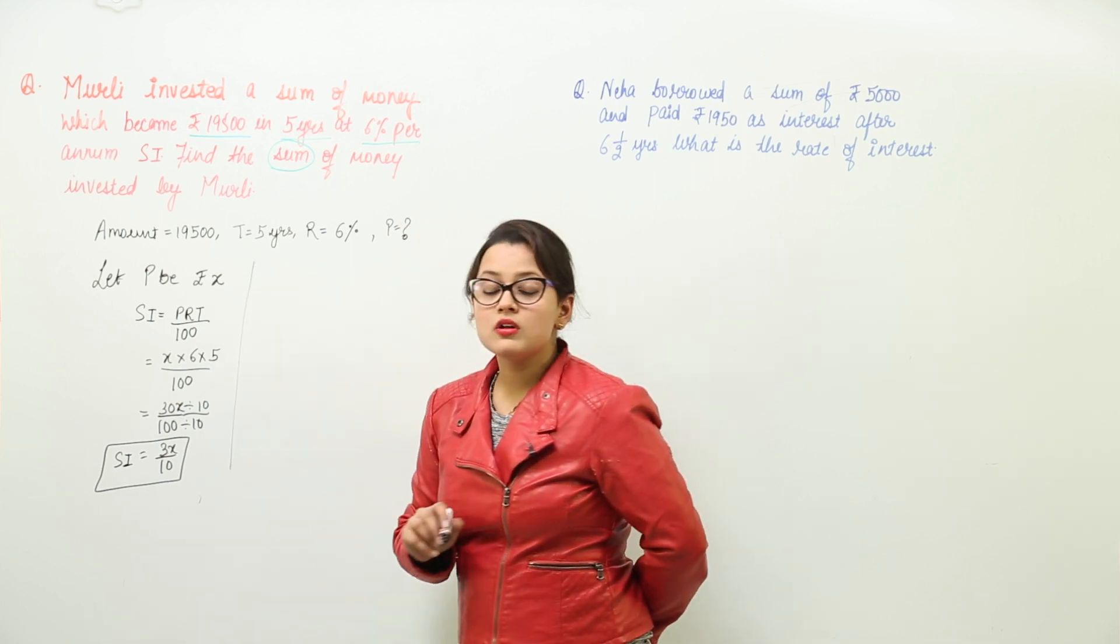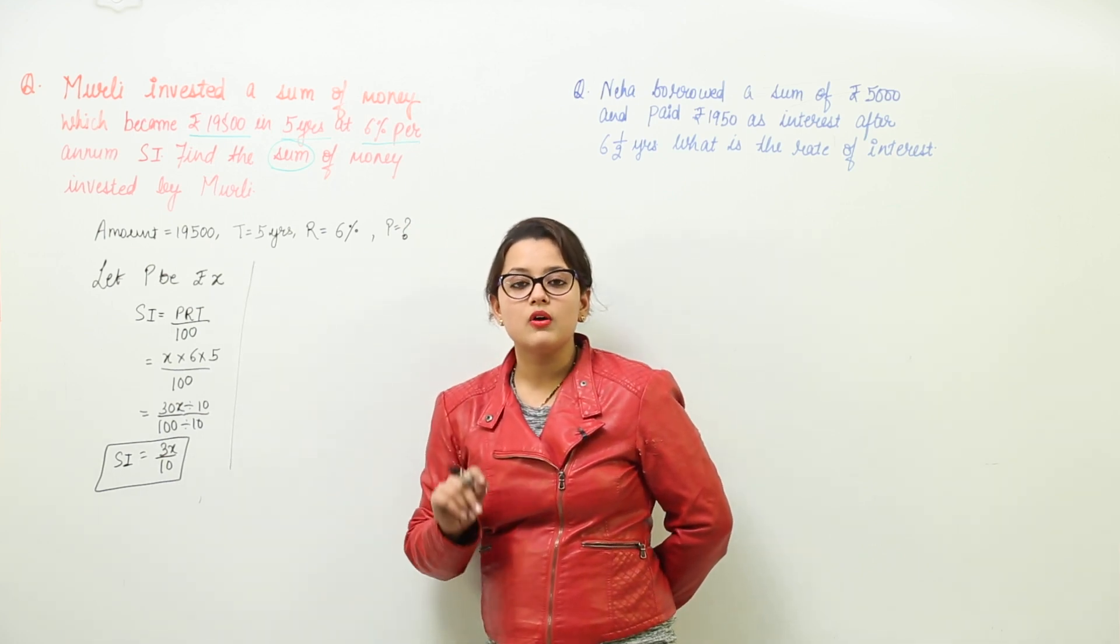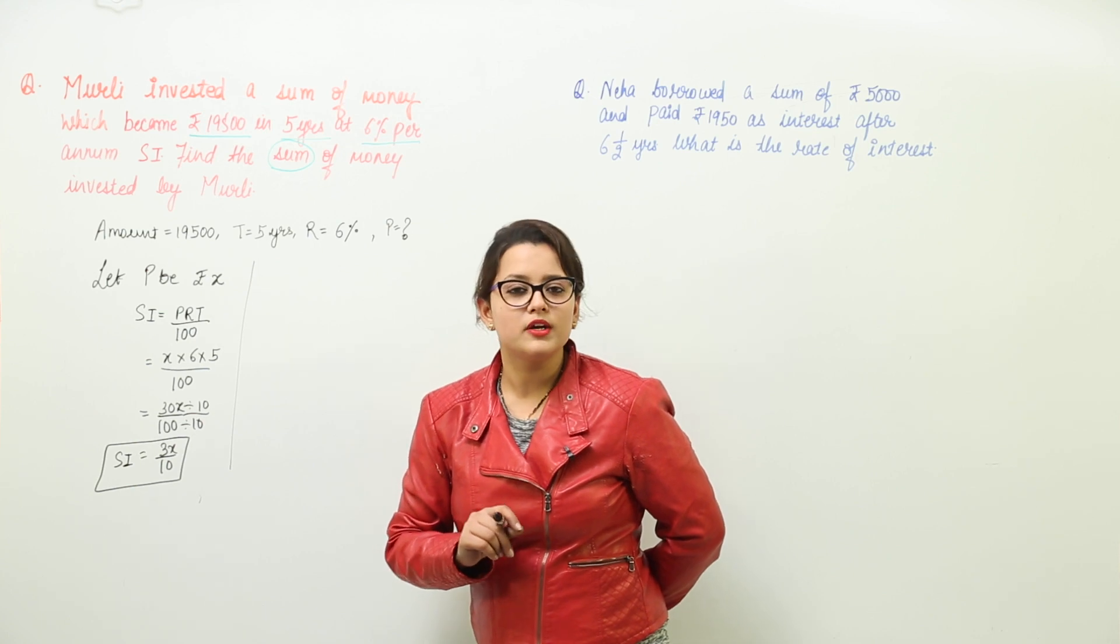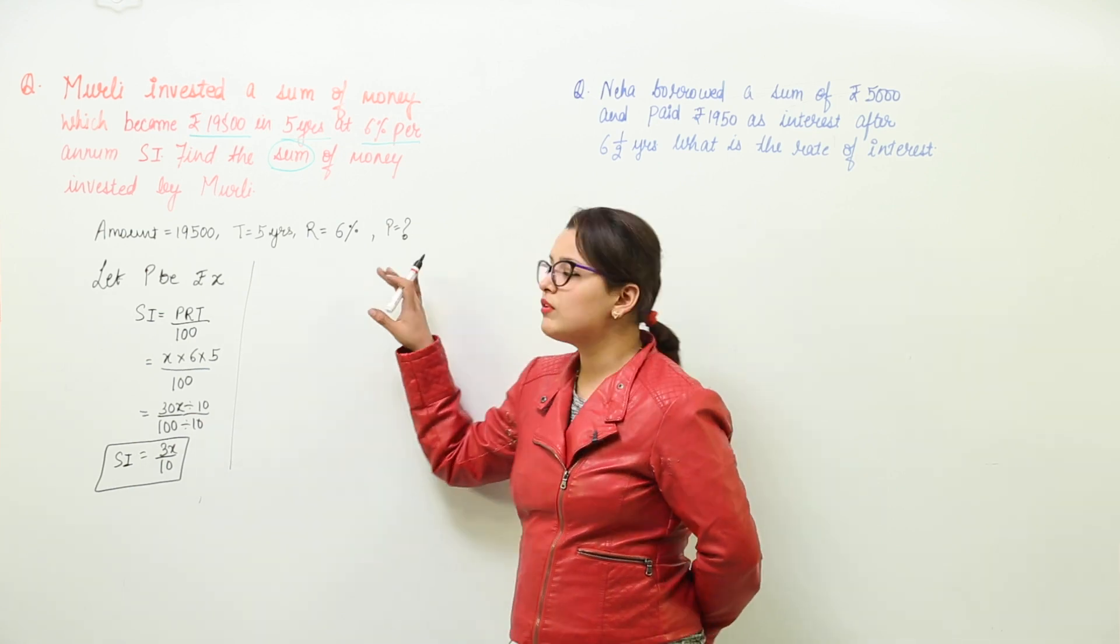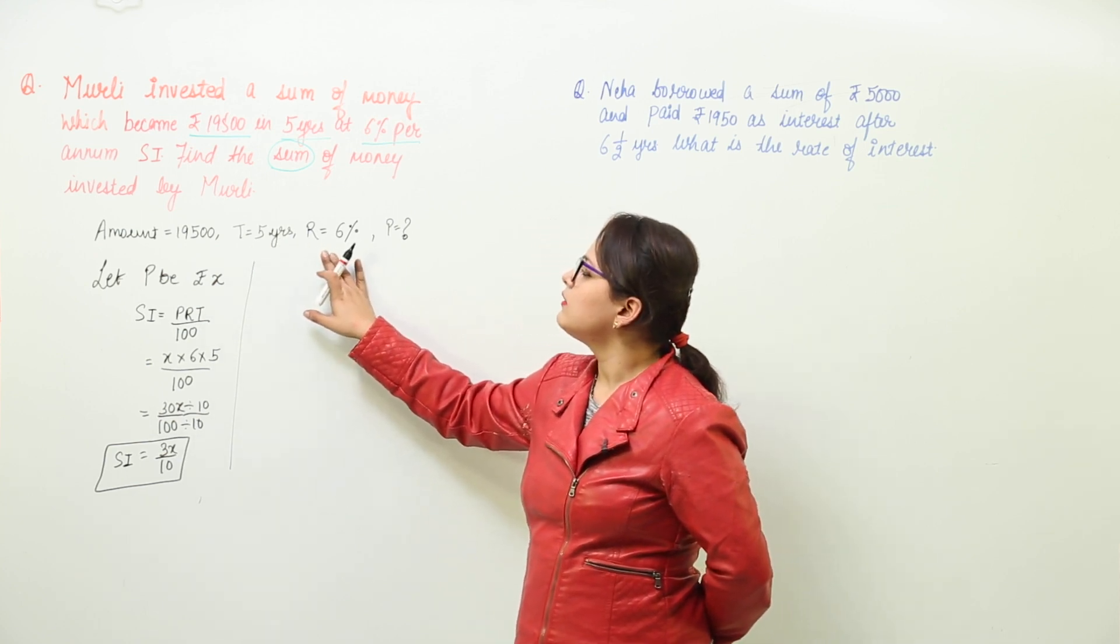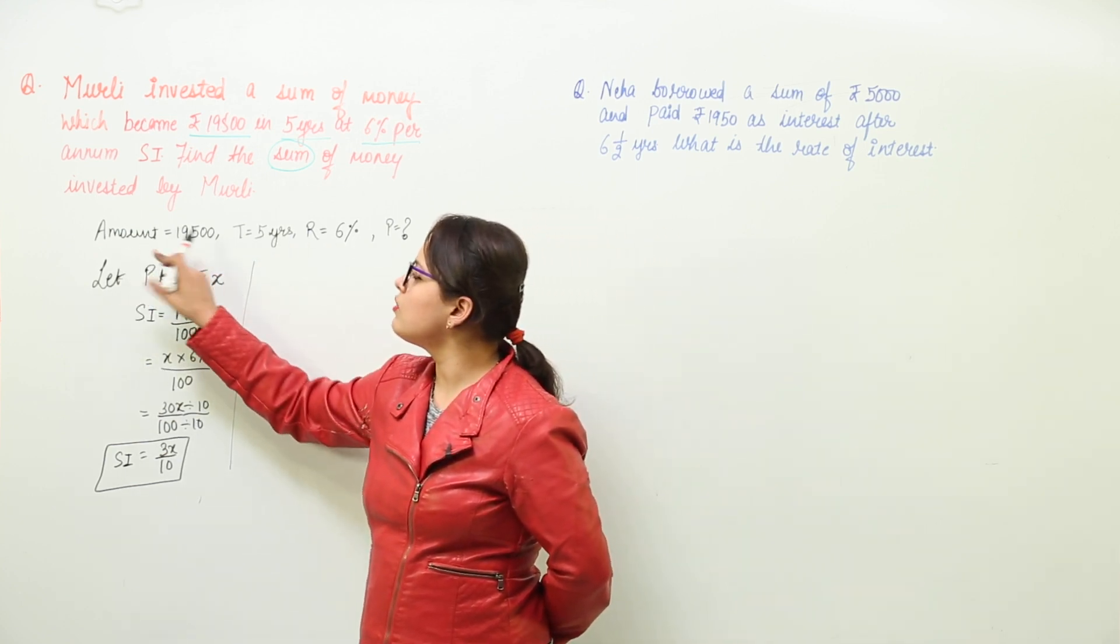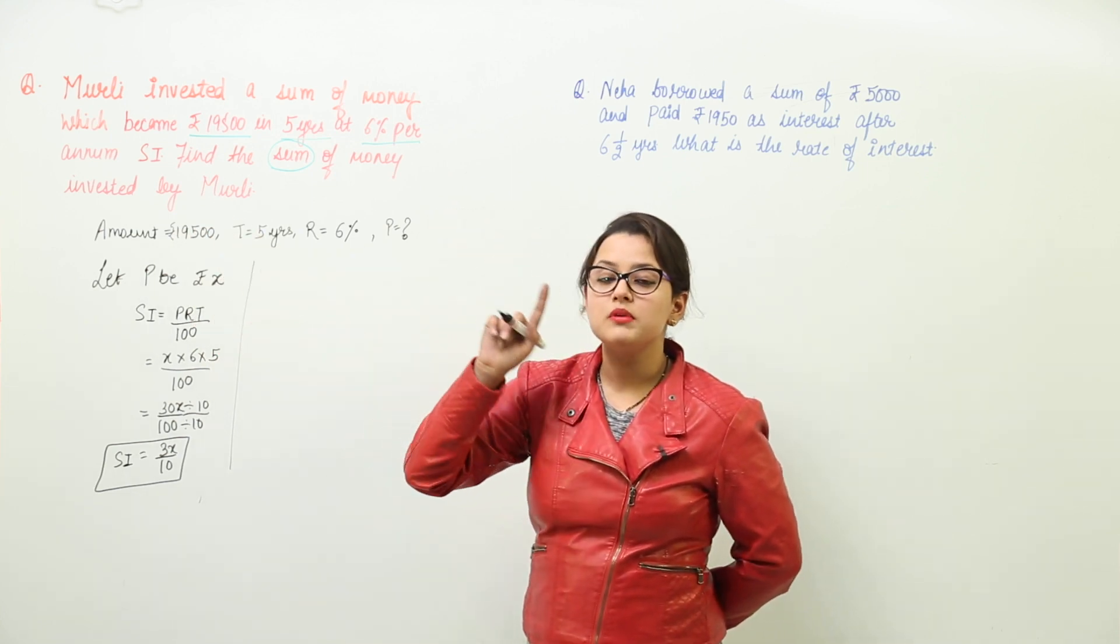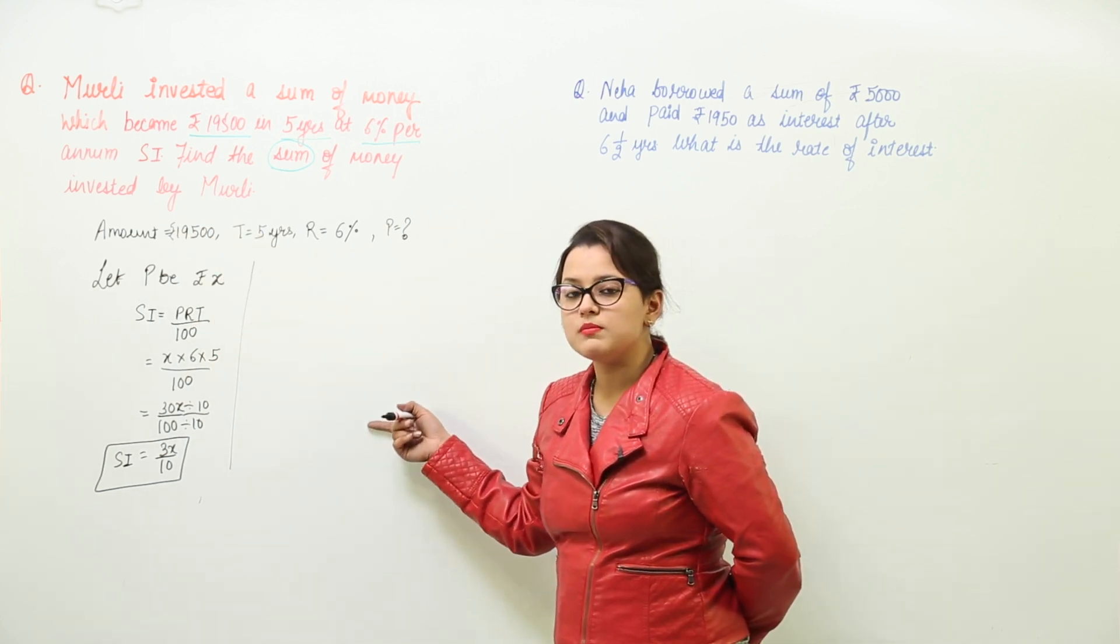But that doesn't solve my problem. I needed to find out the principal. So what will I do? Now you can please have a look at the question here. I have used time and rate. But I have not used the value of amount up till now. Now this amount can be used now to find out the principal.